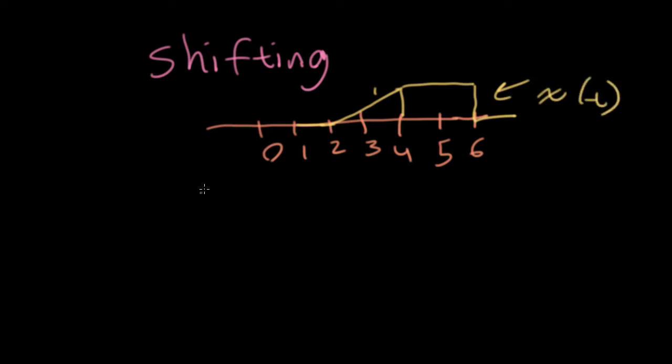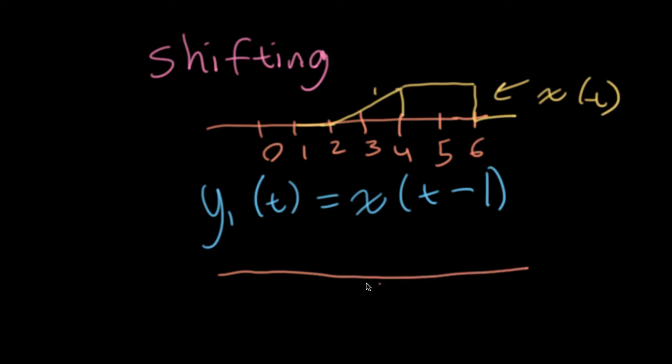Suppose I want to shift it to the right, in which case I'll write y1 of t is equal to x of, let's say I want to just shift it one time unit to the right. So I'll write t minus 1. This forms a delay operation. So I'll put down a new axis to indicate this delay. Here we'll have it start at 3, and it will go up to 7, like thus. So nothing particularly fancy there.